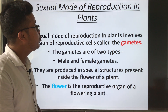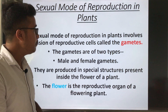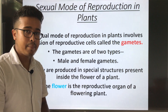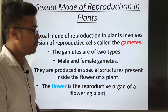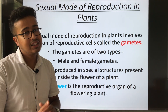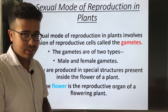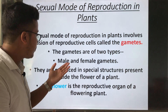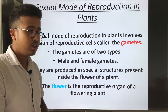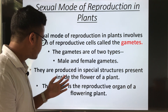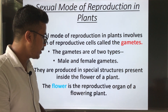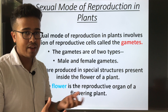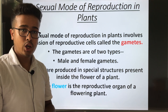Here is another topic: sexual mode of reproduction in plants. Sexual reproduction in plants involves the fusion of reproductive cells called gametes. The gametes are of two types: male gamete and female gamete. They are produced in special structures present inside the flower. The flower is the reproductive organ of a flowering plant.